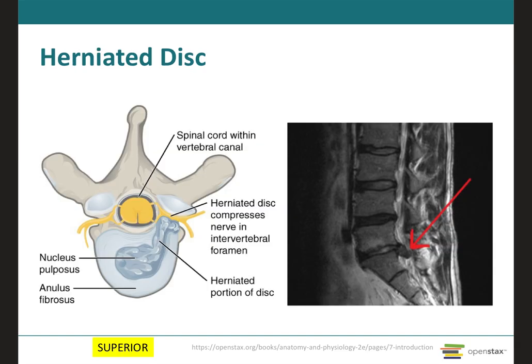Lastly, the herniated disc occurs when all or part of a disc is forced through a weakened part of the disc, which may place pressure on nearby nerves or even on the spinal cord. The disc may move out of place or break open from an injury or strain, and when this happens pressure on the spinal nerves can lead to pain, numbness, and weakness. Recovery requires rest for a prolonged period depending on the severity. Sometimes the patient needs to undergo surgery to remove the herniated disc.